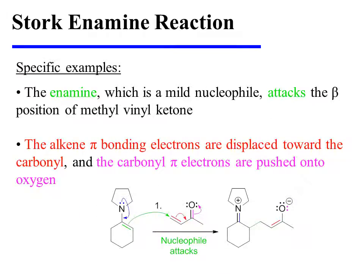The enamine, which is a mild nucleophile, attacks the beta position of methyl vinyl ketone. As it does so, nitrogen's lone pair forms an aminium ion. The alkene pi bonding electrons are displaced towards the carbonyl, and the carbonyl pi electrons are pushed onto oxygen.